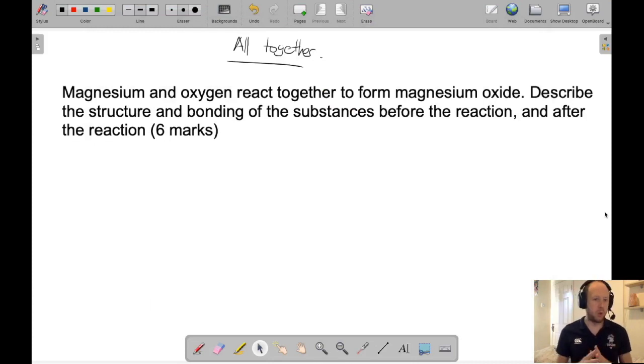Okay, what I've done here is I've just thrown up a very common example of a six mark question that you'd get about structure and bonding. It says here, magnesium and oxygen react together to form magnesium oxide. Describe the structure and bonding of the substances before the reaction and after the reaction.